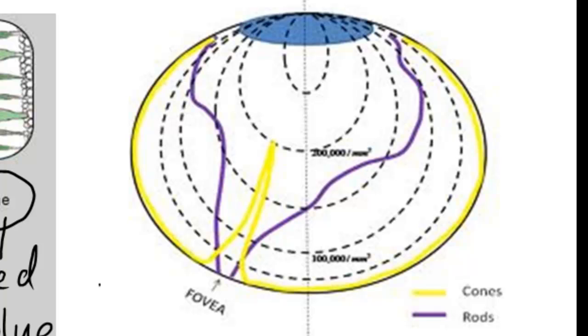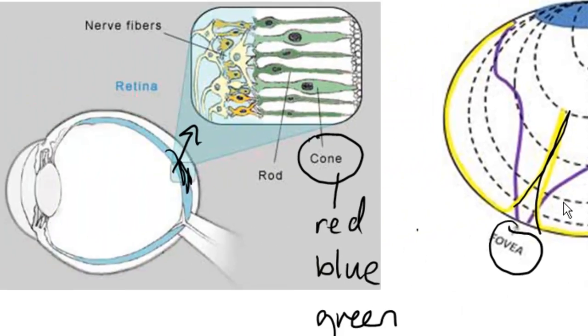Now if we look at this image of the eyeball, here's our lens and our image goes straight through. At this region called the fovea is where the cones are most highly concentrated. Now we don't have nearly as many cones as we do rods.